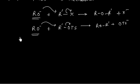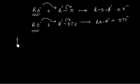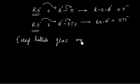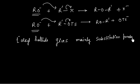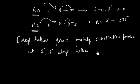Generally this reaction works better for primary and secondary alkyl halides. Tertiary alkyl halide gives elimination product. Primary alkyl halide gives mainly substitution product, but secondary alkyl halide also gives some elimination product.